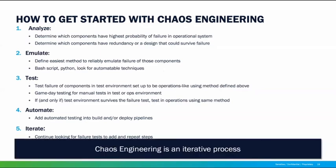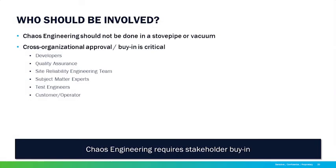Chaos Engineering is an iterative process. Just like Netflix keeps adding to their Simian Army, your suite of chaos tests will grow over time. It shouldn't be done in a silo — you need buy-in from stakeholders. For initial small-scale testing you can work alone in a disposable environment, but as you expand into long-lived test environments or production, you need to make sure everyone impacted understands what's happening and why it's being done on purpose.